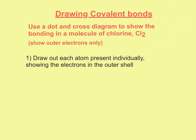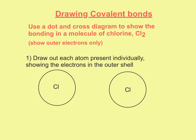Whenever we come to drawing out each atom individually, we draw each atom and put in the number of electrons in the outer shell. I've drawn two chlorines because the molecule is Cl2, meaning there are two chlorine atoms. I'm going to put in seven electrons in each. This is a dot-cross diagram, so for one I'm going to put in seven crosses, and in the other one seven dots. So that's the first step.